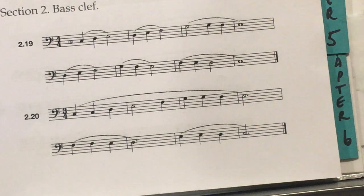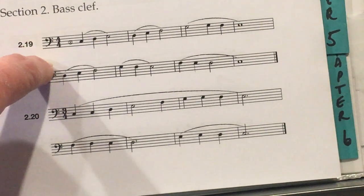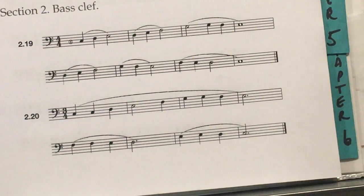that the pattern of solfege doesn't change regardless of what the pitches are. For example, in number 2.19 here, the first few notes are C, D, and E. Okay, so in the key of C, that's Do, Re, Mi. You know, if you were to read this in treble clef, if you change the bass clef here to a treble clef instead, the notes would be A, B, C, which would still be Do, Re, Mi.